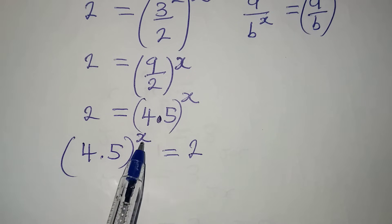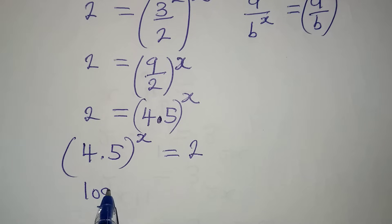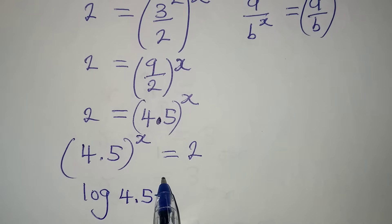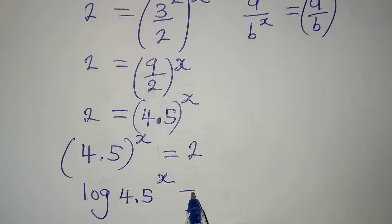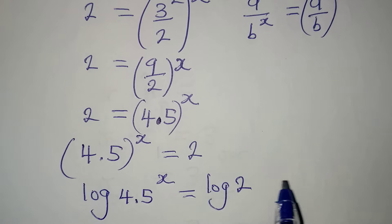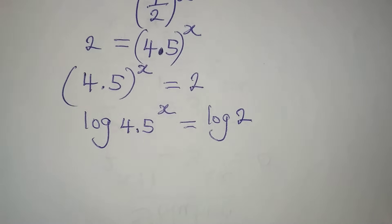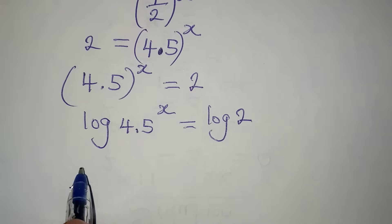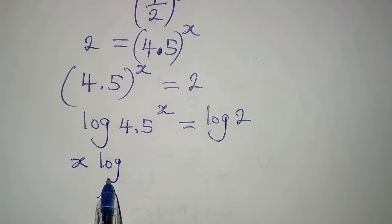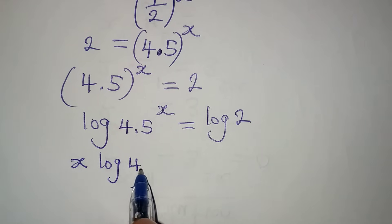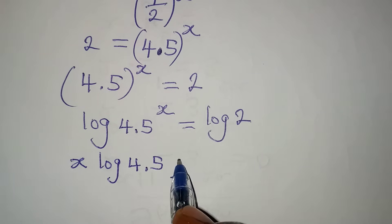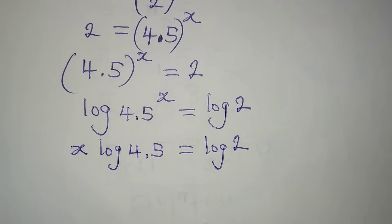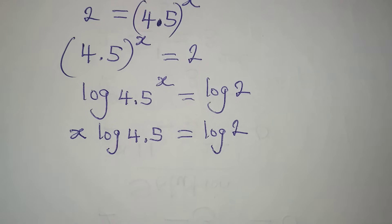We haven't changed anything. Now let's take the log of both sides, because we have one x. So we have log of 4.5 to the power of x equal to log 2. By the logarithm power rule, the exponent comes down, giving us x times log 4.5 equal to log 2.